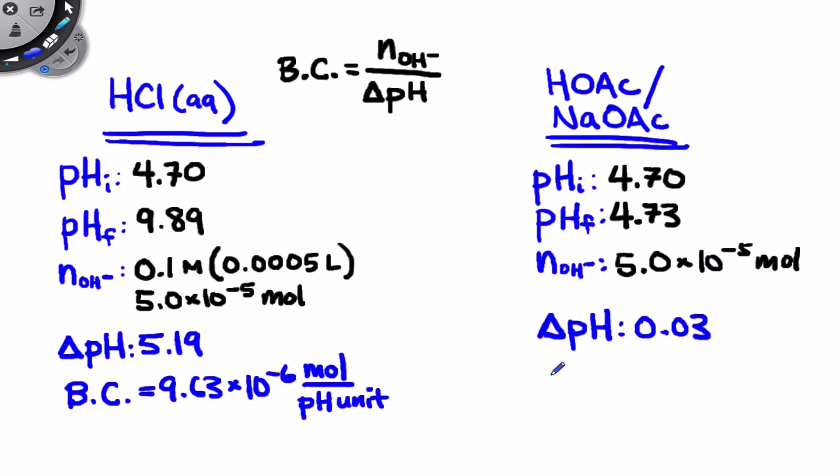In the case of the acetic acid acetate buffer, we get a much, much larger number since we're dividing by a very small number here. We end up with 1.67 times 10 to the negative 3 moles per pH unit.